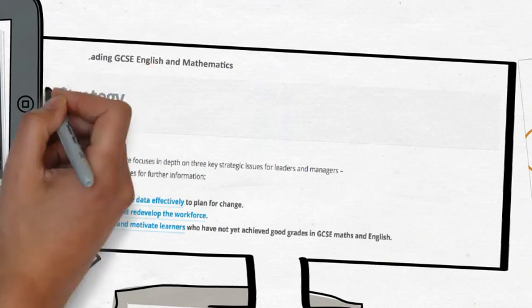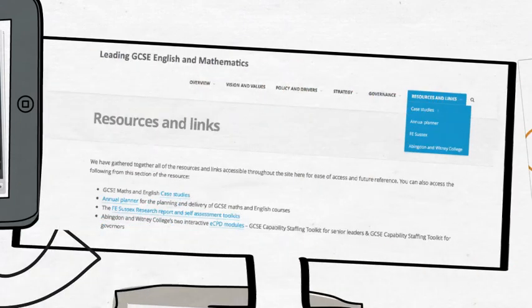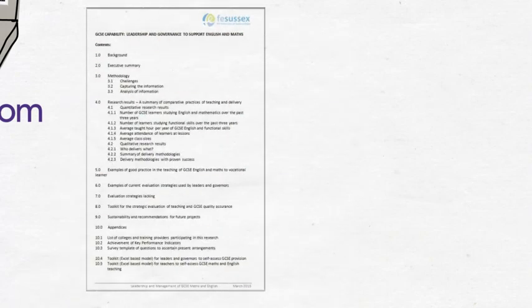The Resources and Links section is organised around an A to Z directory of all resource links. There are also case studies, an annual planner and the FE Sussex Research Report. This research highlights evaluation strategies currently used by leaders and governors but importantly also those that appear lacking.